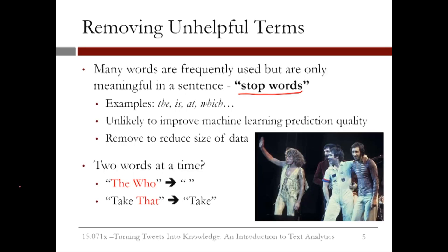There are some potential problems with this approach. Sometimes two stop words taken together have a very important meaning. For example, 'The Who,' which is a combination of two stop words, is actually the name of the band we see on the right here. By removing the stop words, we remove both of these words, but 'The Who' might actually have significant meaning for our prediction task.